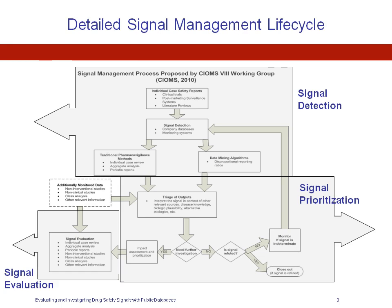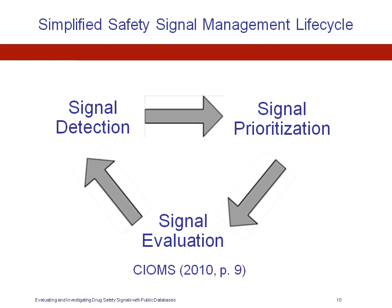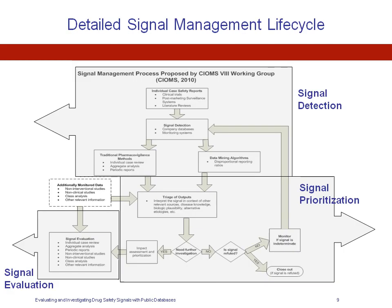I wanted to show you the actual CIOMS 8 Working Group signal management diagram. I tried to simplify it by categorizing activities into three cyclic properties: signal detection, followed by signal prioritization, followed by signal evaluation. As you can see, there is actually a lot of detail within each of those simplified steps within signal management, all clearly outlined by the CIOMS 8 Working Group in a very easy-to-understand manner.